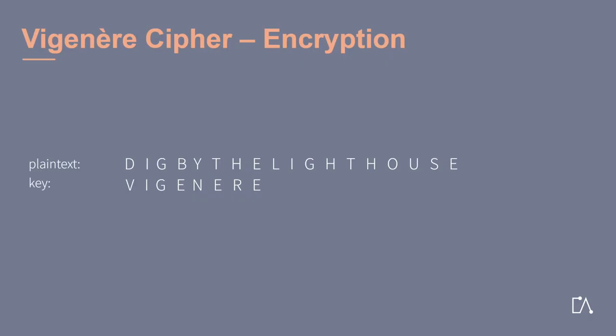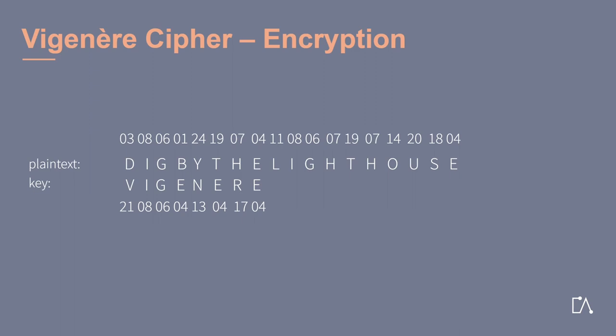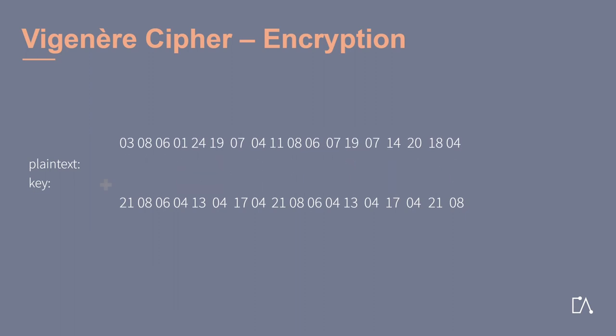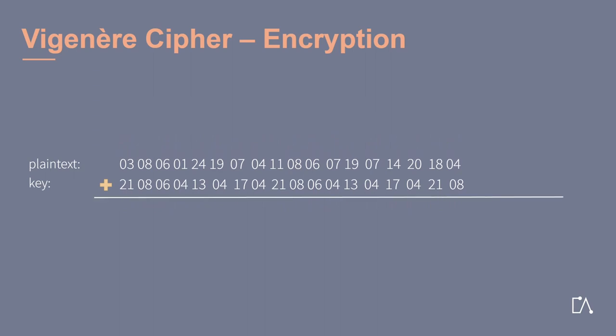So far, we have converted our plaintext and key into numbers. In this step, we want to actually apply the key to our plaintext. For the Vigenère cipher, the key is usually shorter than the message. Therefore, we repeat the key as often as necessary, even only partially. For the actual encryption, we can forget about the letters and only work with the numbers. We now add the numbers of the plaintext with the numbers of the key — each number of the plaintext individually to the one number of the key below it.